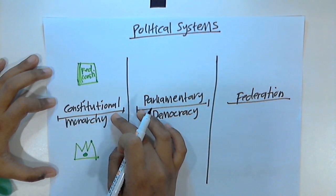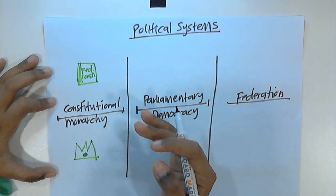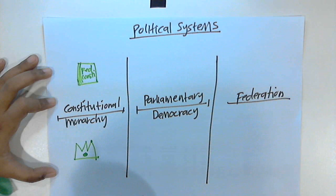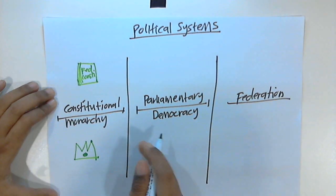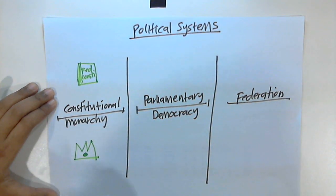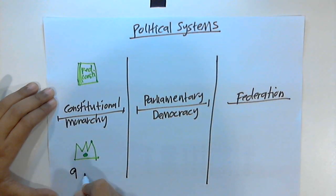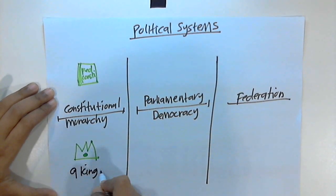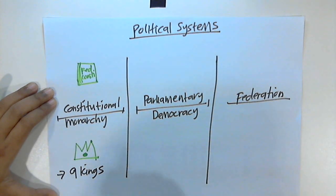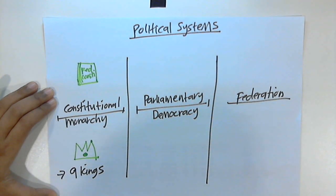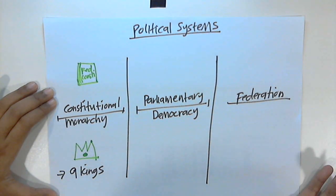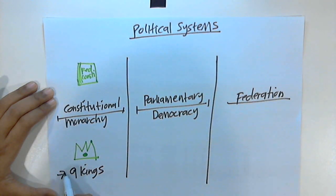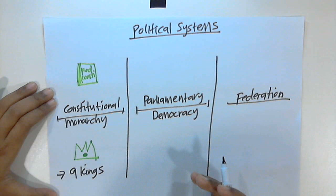In constitutional monarchy, in order for a government to be known as a constitutional monarchy, it must have a monarch or king. We have a king in Malaysia, and this is a unique feature of Malaysia. We have nine kings in Malaysia — we are the only country in the world with more than one king. Other countries either have one king or no king at all. We have nine monarchs, and one of them serves as Yang Di-Pertuan Agung, rotating among the nine kings every five years.